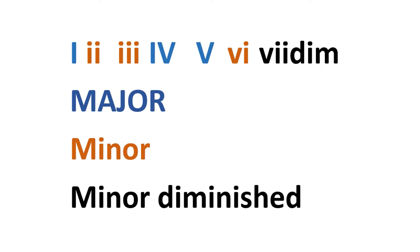This is the typical notation you would see regarding chord progressions. I've color coded the major and minor chords. As you can see, the major chords are your 1, 4, and 5. Your minor chords are your 2, 3, and 6. And your 7th is a minor diminished.